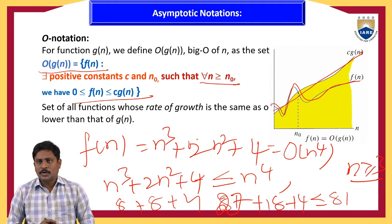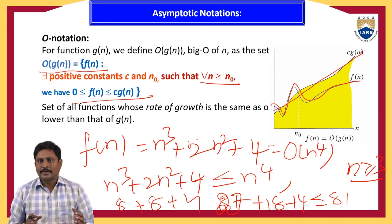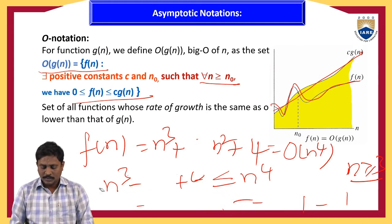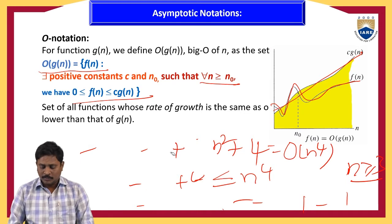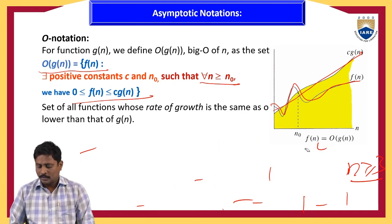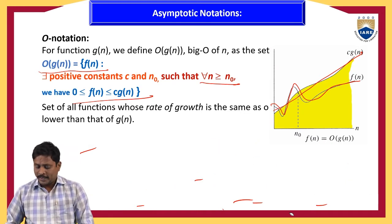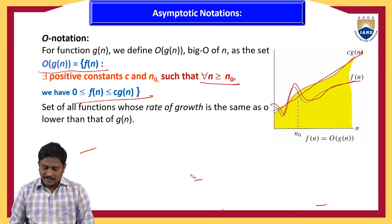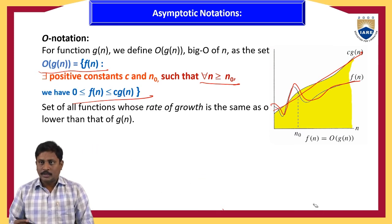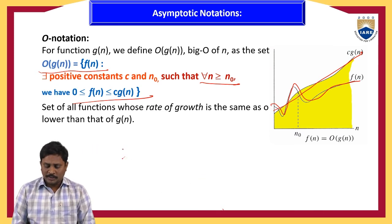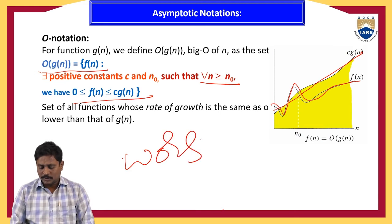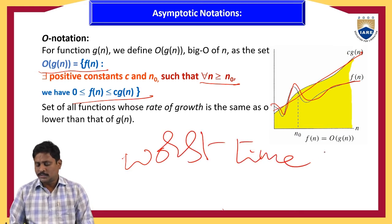In this way, we represent any time complexity value in terms of big O notation. Big O notation is used in worst case time complexity representation.